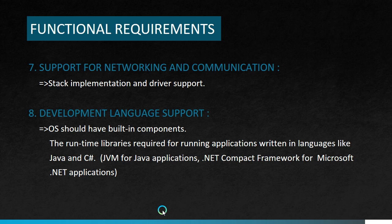Next we move on to the eighth requirement: development language support. Certain operating systems include the runtime libraries required for running applications written in languages like Java and C#. We require a JVM for Java applications and a .NET Common Language Runtime framework for Microsoft .NET applications. These runtime libraries should be present. If these components are not there, we can check their availability from a third-party vendor for the OS under consideration.